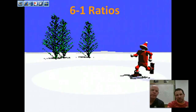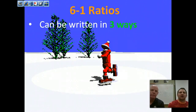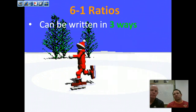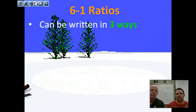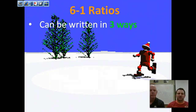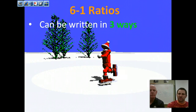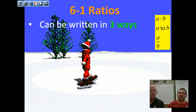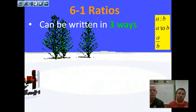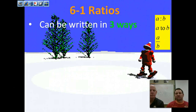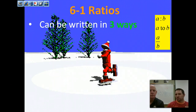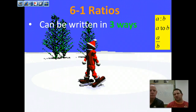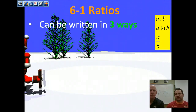We're going to start off with ratios. So 6.1 is ratios. When we talk about ratios, always remember that we can write those in three ways: A to B with a colon, the word 'A to B', or as a fraction A over B. Those are the three ways you're going to see ratios done throughout this chapter.